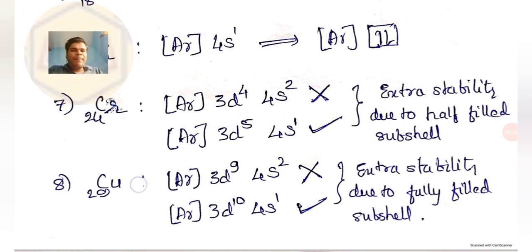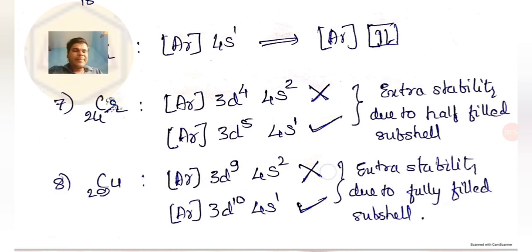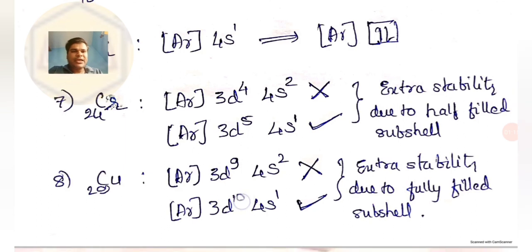On similar grounds, copper with atomic number 29: the expected configuration would be [Ar] 3d⁹ 4s², but the actual ground state electronic configuration of copper is [Ar] 3d¹⁰ 4s¹. The reason is that the d subshell is completely filled in this arrangement, and extra stability is associated not only with half-filled configurations but also with fully filled subshells — giving copper this configuration due to extra exchange energy.